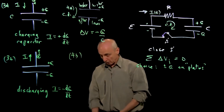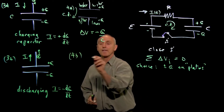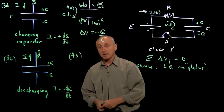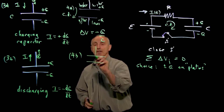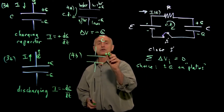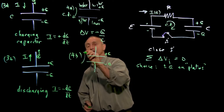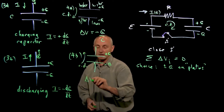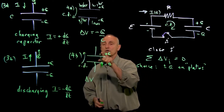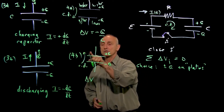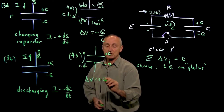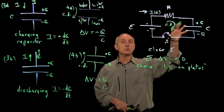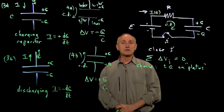For the other case: if we have our capacitor with plus q and minus q and we circulate from the negative plate to the positive plate — from the lower to the higher voltage, before to after — just like a battery, we get plus q over C. These are the tools we need to analyze our capacitor.